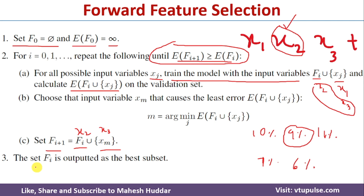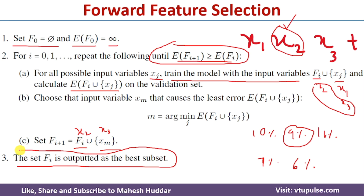Whatever the final subset we have is the best subset for the given dataset. This is the simplest procedure we follow in forward feature selection to get the best subset.